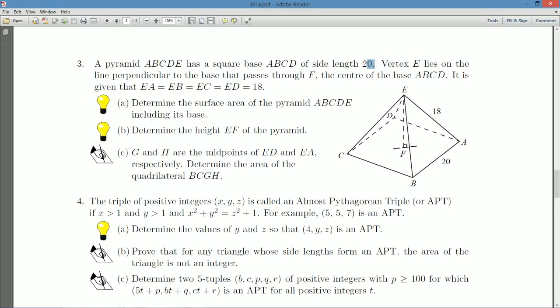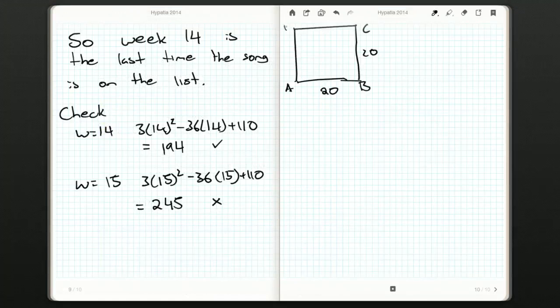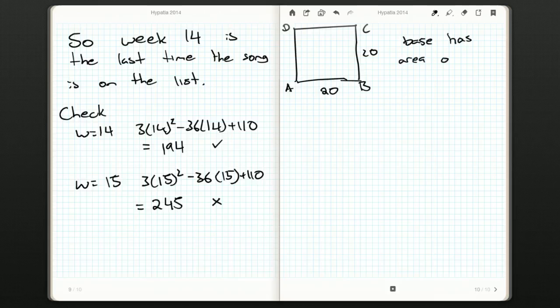Part A: Determine the surface area of pyramid ABCDE, including its base. So if we want to compute the surface area, we're going to have to figure out the areas of each of these four triangles and then add it to the area of the base. So the base has an area of 400. How about our triangles?